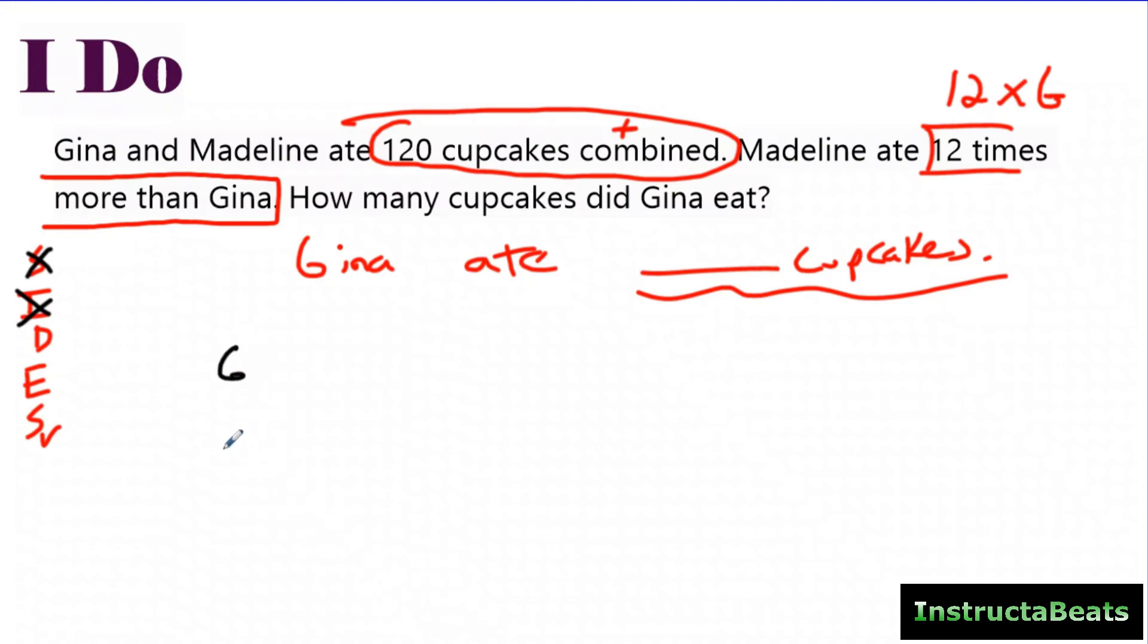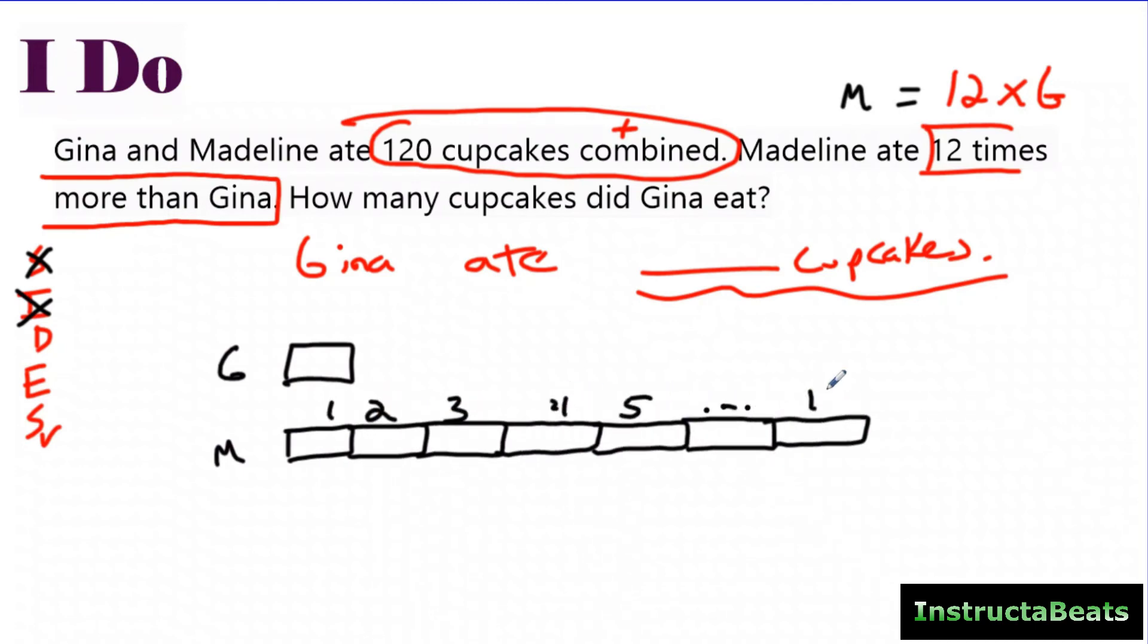So I'm going to start with Gina and Madeline. I'm going to give each of them one group. There we go. Perfect. And I know that Madeline ate 12 times more than Gina. So Madeline equals 12 times Gina. So Madeline's going to have 12 times more groups than Gina. And again, I don't want to draw 12. They should be equal. I'm doing my best to keep them equal. I'll just kind of do right here. And then I want to make sure I label them. One, two, three, four, five, dot dot dot, 12.